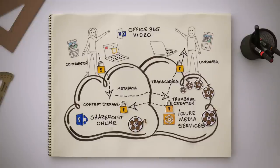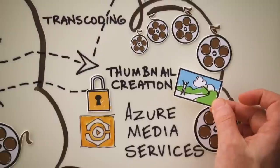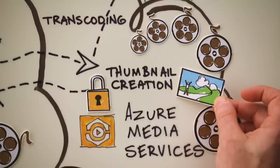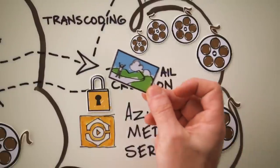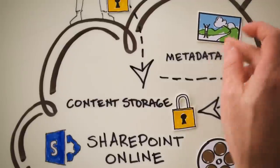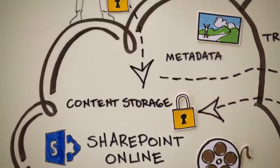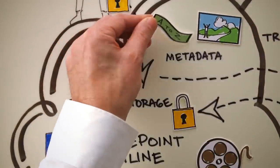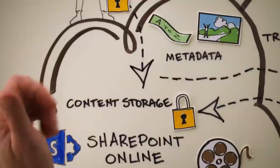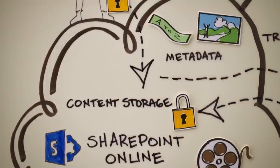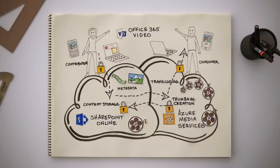Beyond upload and playback, Office 365 Video also leverages Azure Media Services for thumbnailing. A video thumbnail is generated by Azure Media Services and sent back to SharePoint Online as metadata. And then, as you start to fill out title, description, and whatnot about the video, that is also going to be stored in SharePoint Online and displayed on the video's playback page.